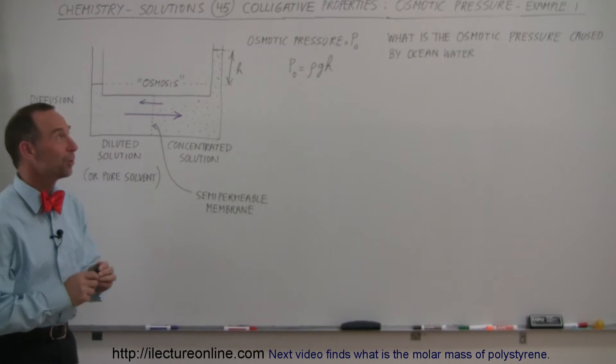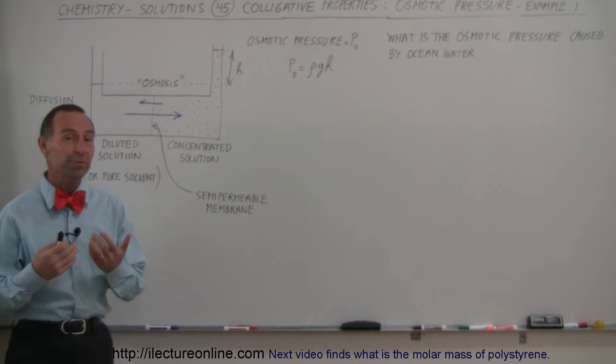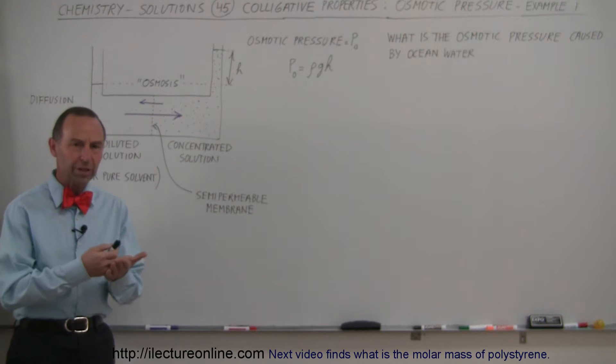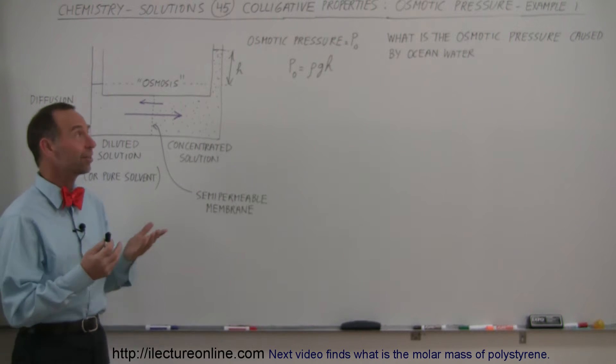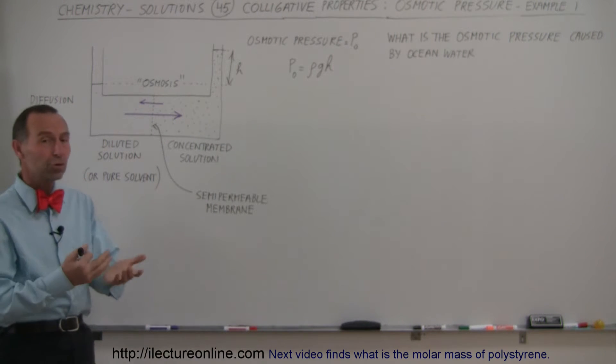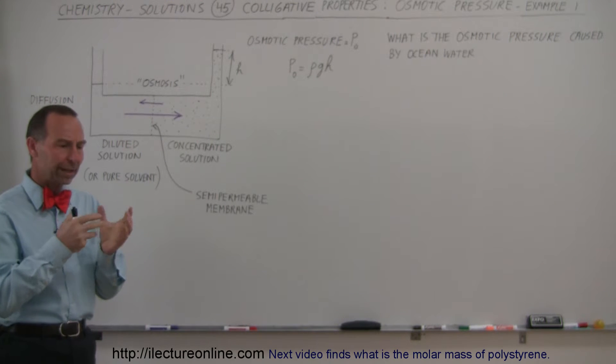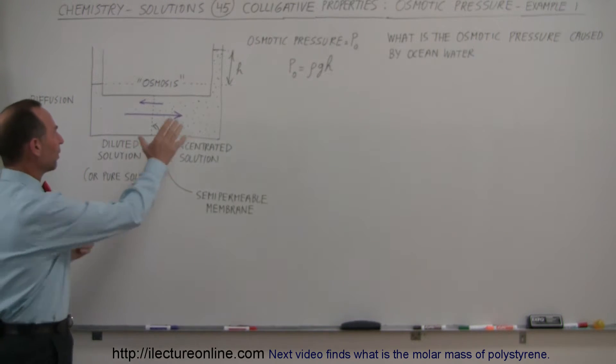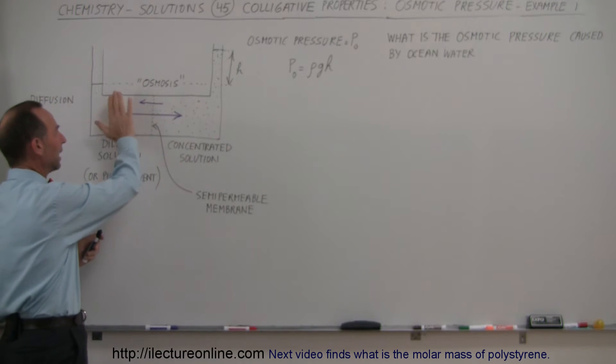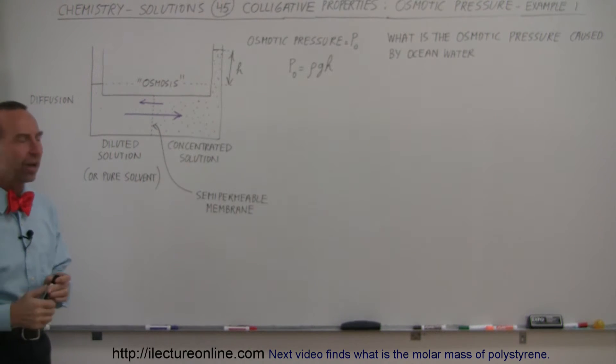Welcome to Electron Line, and now we're going to do an example of how to calculate the osmotic pressure of a solution that has some sort of solute in it. In this case, let's take seawater or ocean water. What kind of osmotic pressure will ocean water exhibit when we put it on one side of a semipermeable membrane and have fresh water on the other side?